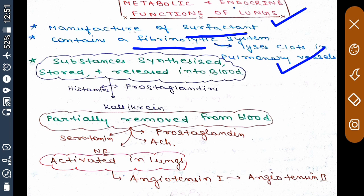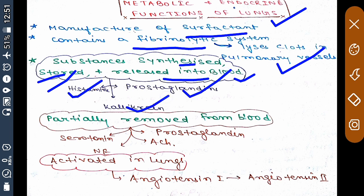Some substances are stored, synthesized, and released into the blood by the lungs. These substances include histamine, prostaglandin, and kallikrein.